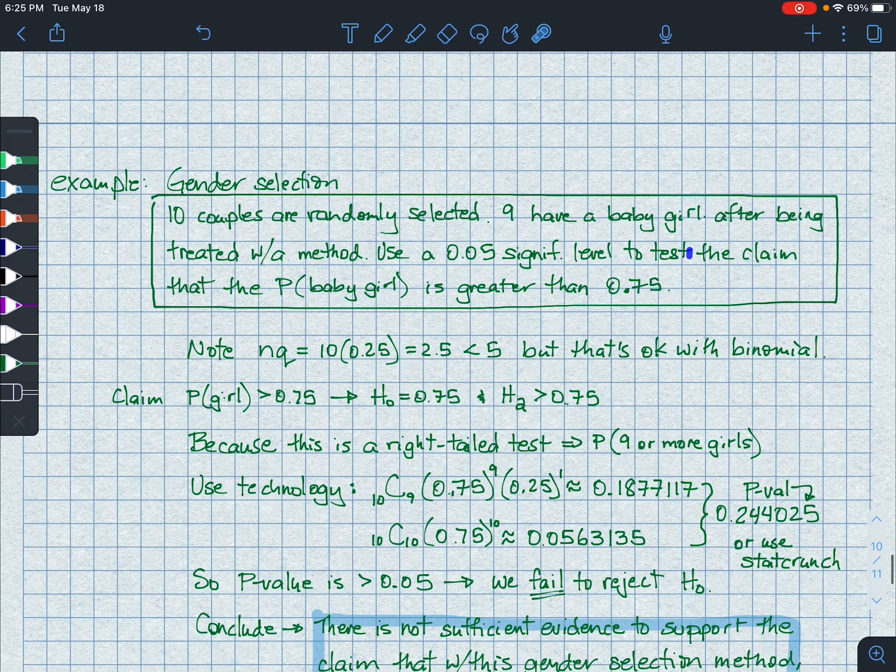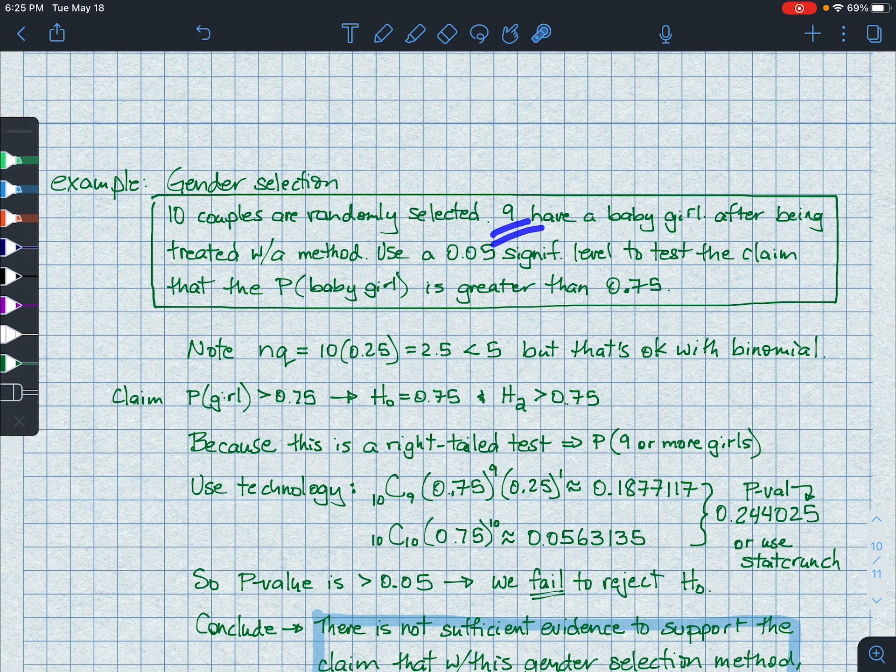So here we go. 10 couples, n. 9 have a baby girl after being treated with some sort of method. Use the 5% significance level to test the claim that the probability of getting a baby girl is greater than 75%. Somewhat ridiculous, I realize. Don't hold your breath. So again, n times q is 2.5. And that tragically keeps us from using the approximation. So we need to use an exact. Fortunately, n is small, so we can get away with this.